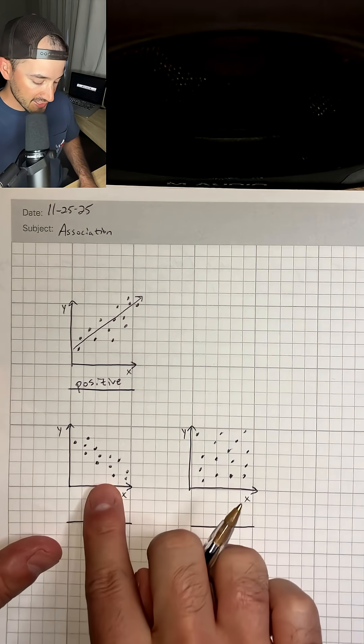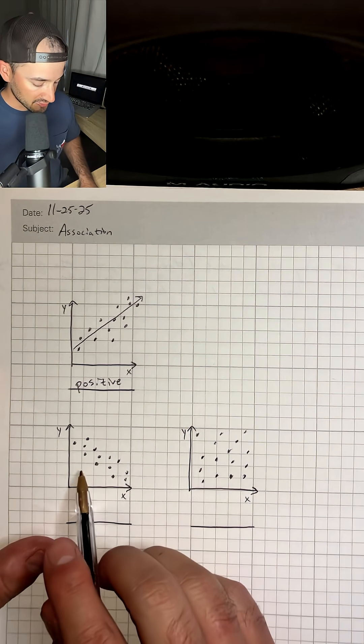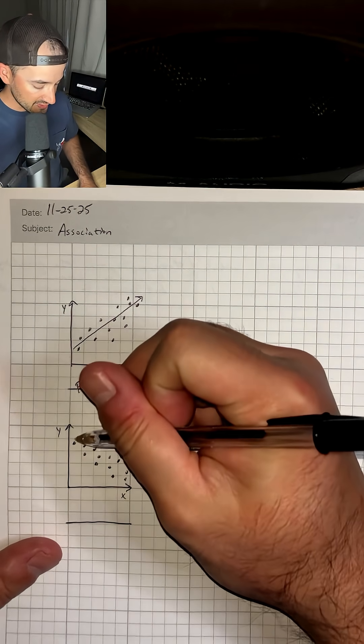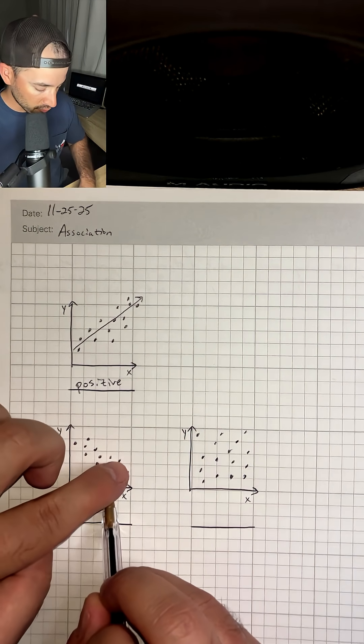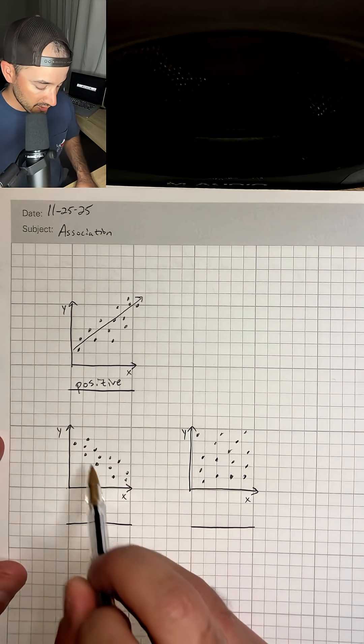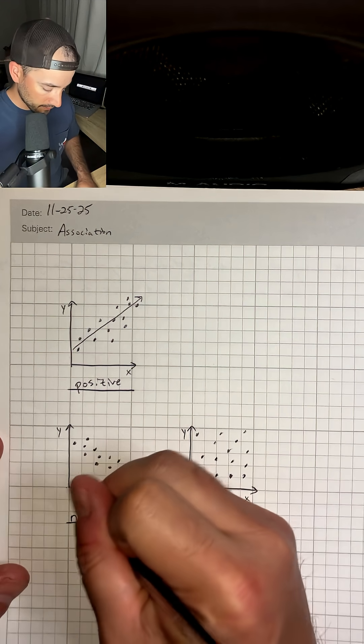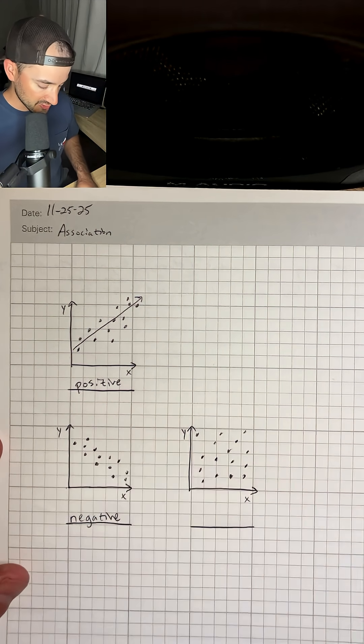Now, for our next one, you can probably guess it, but let's go ahead and go through it. So this time, as we go from left to right, our points are coming down or decreasing. And so that's going to be a negative association.